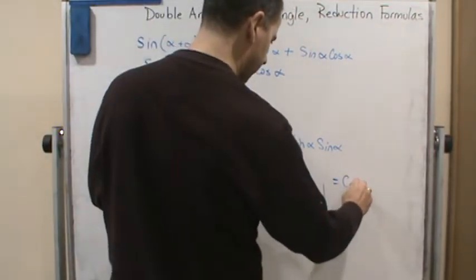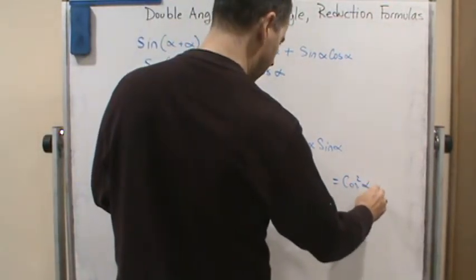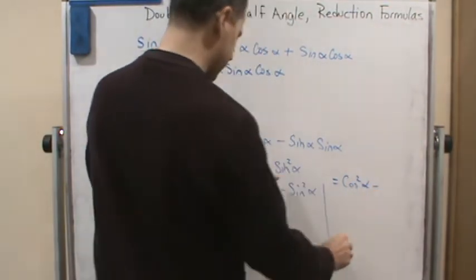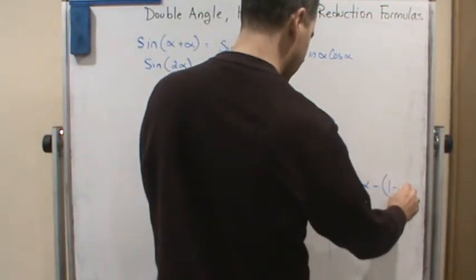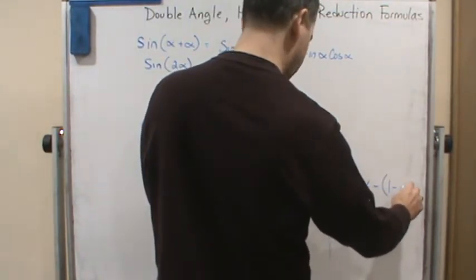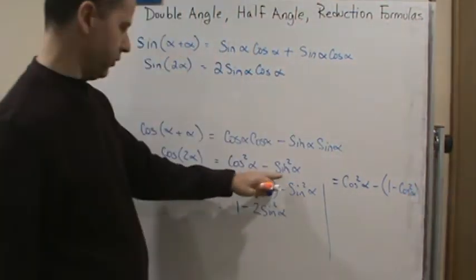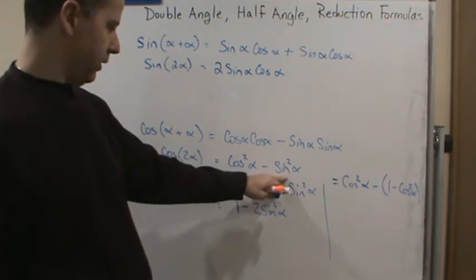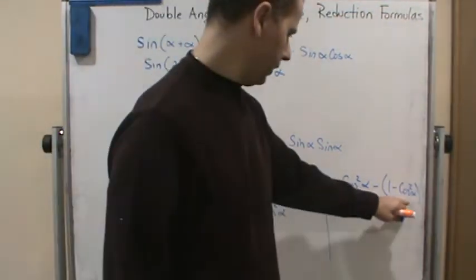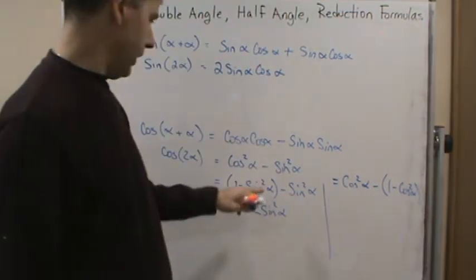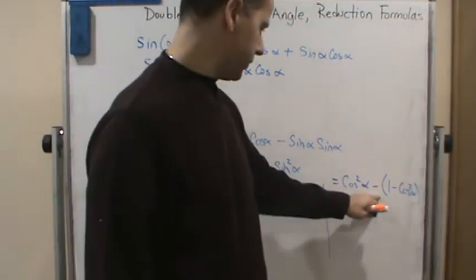We'd get cosine squared alpha minus what? 1 minus cosine squared alpha. So all I did was substitute in for sine squared alpha for this. And so now, instead of subtracting this, I'm subtracting this.